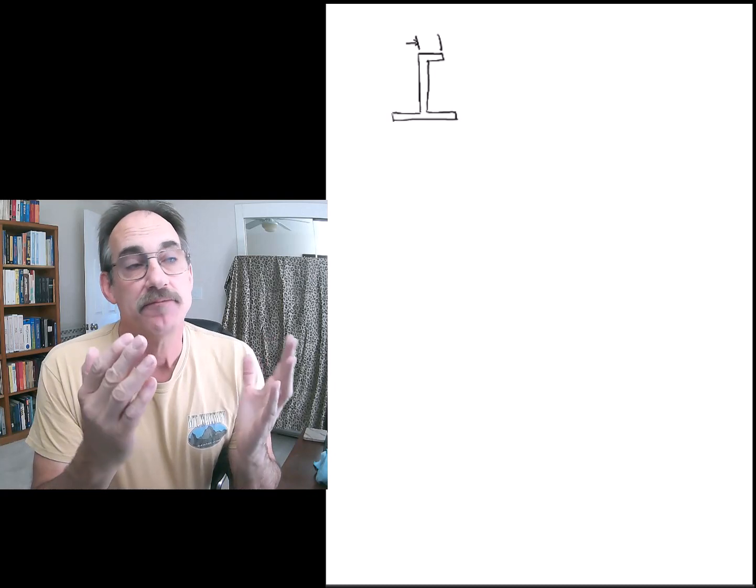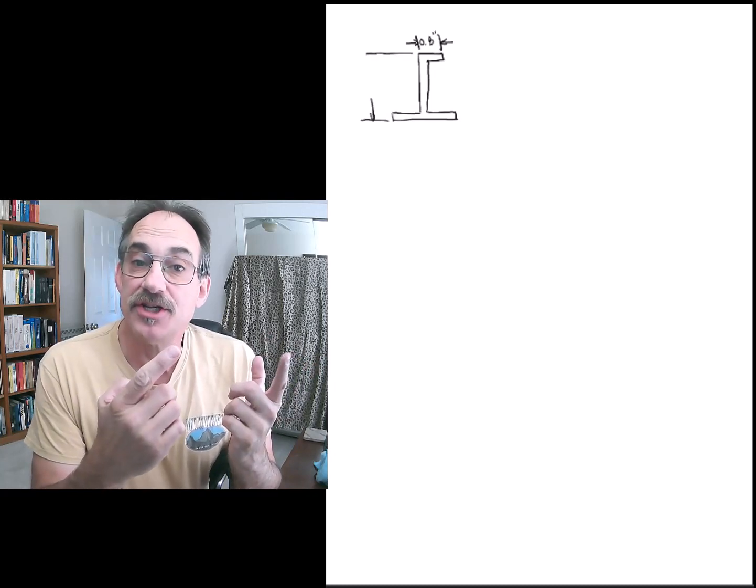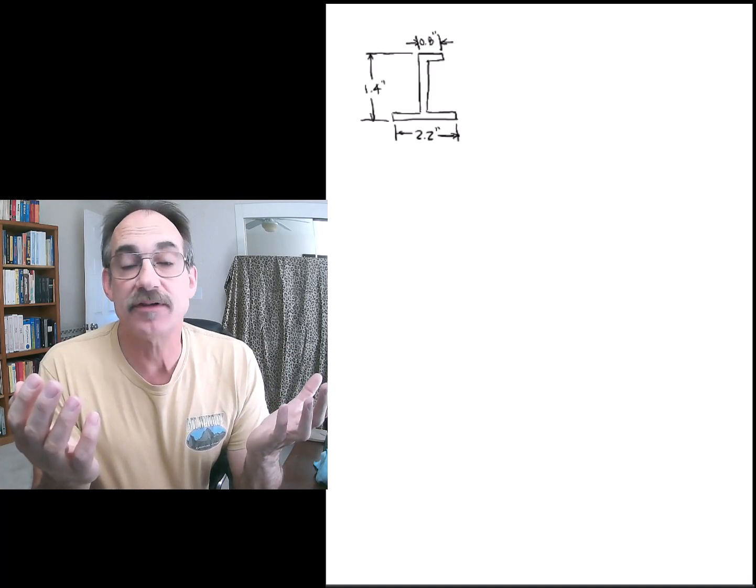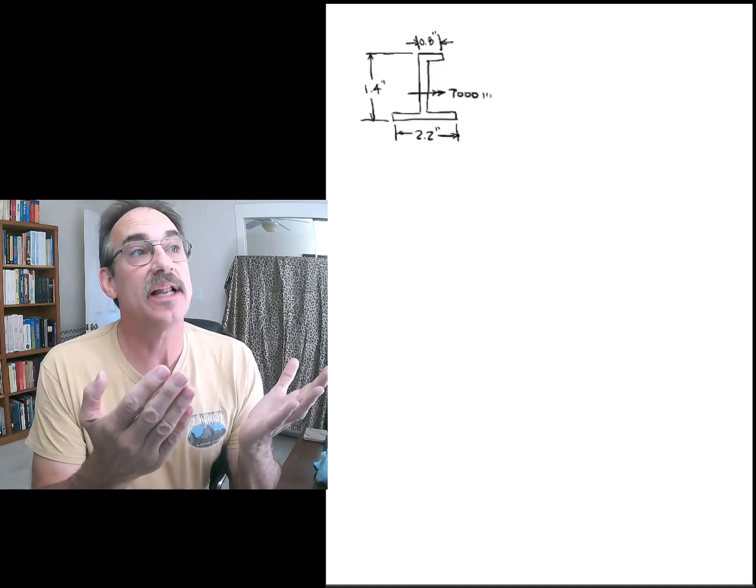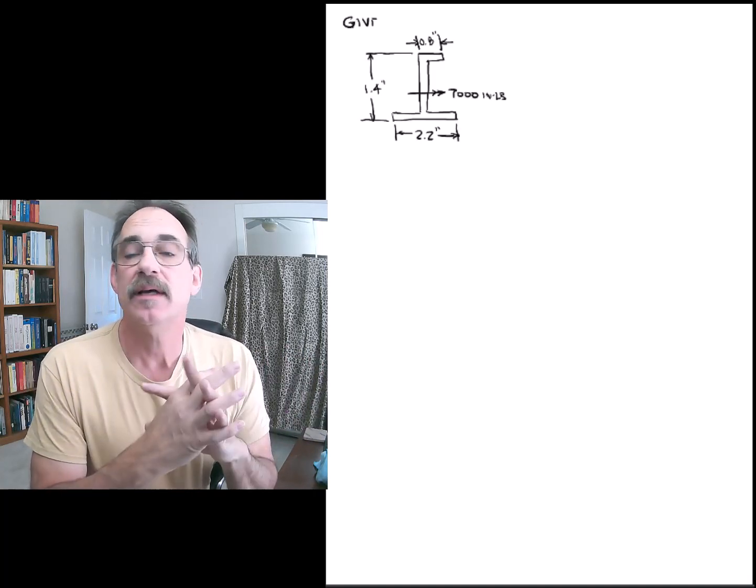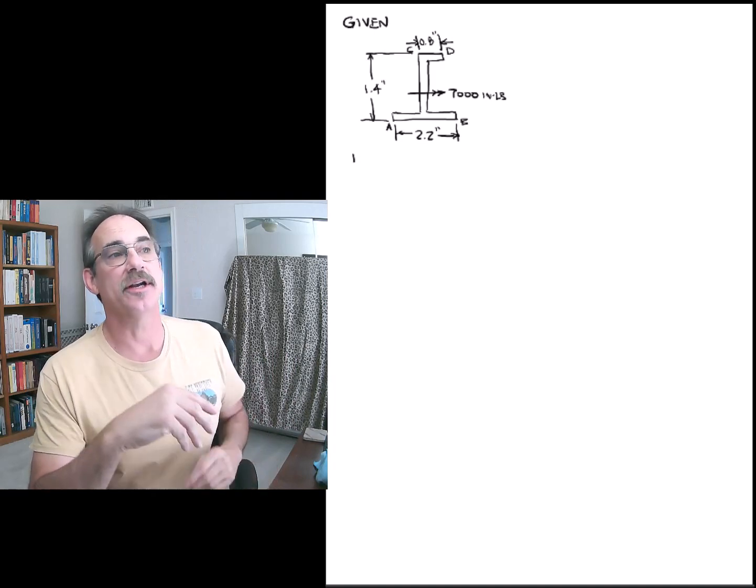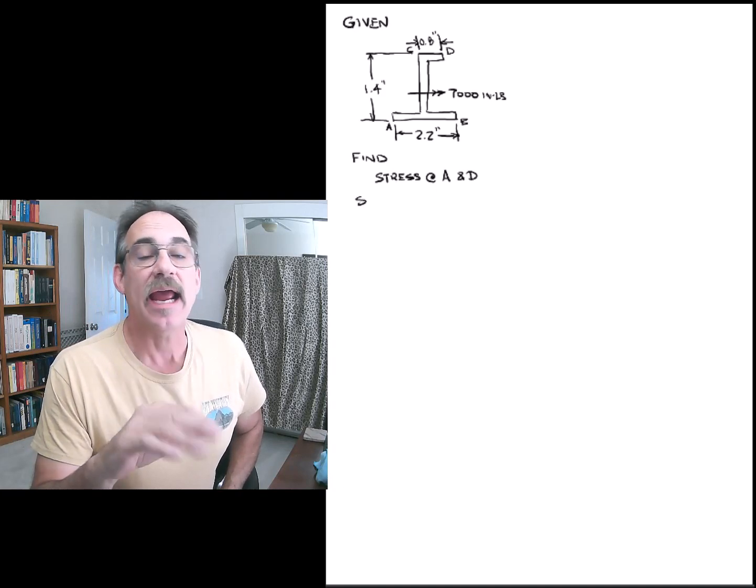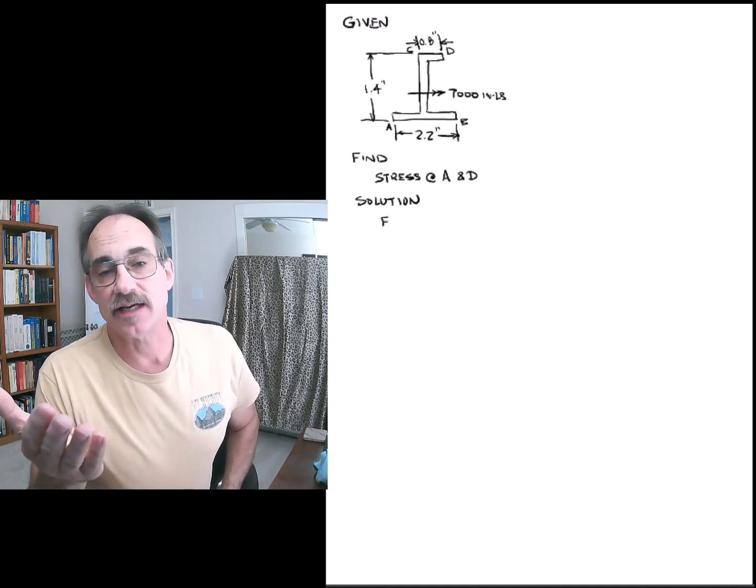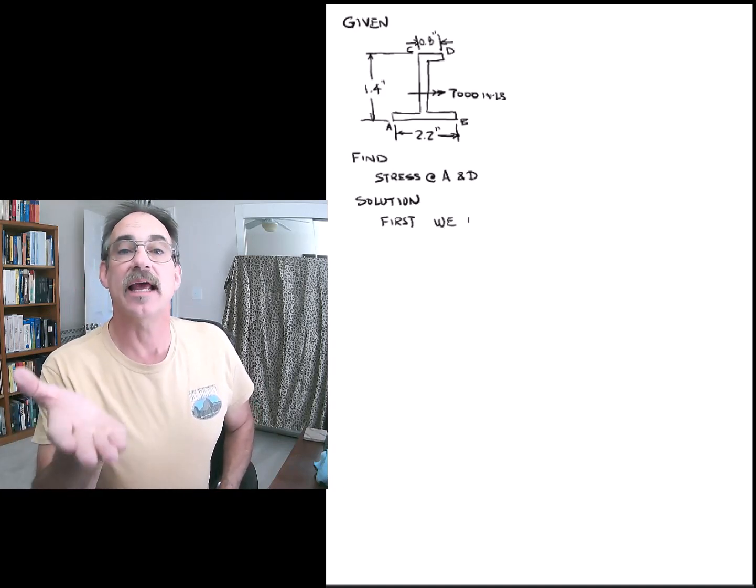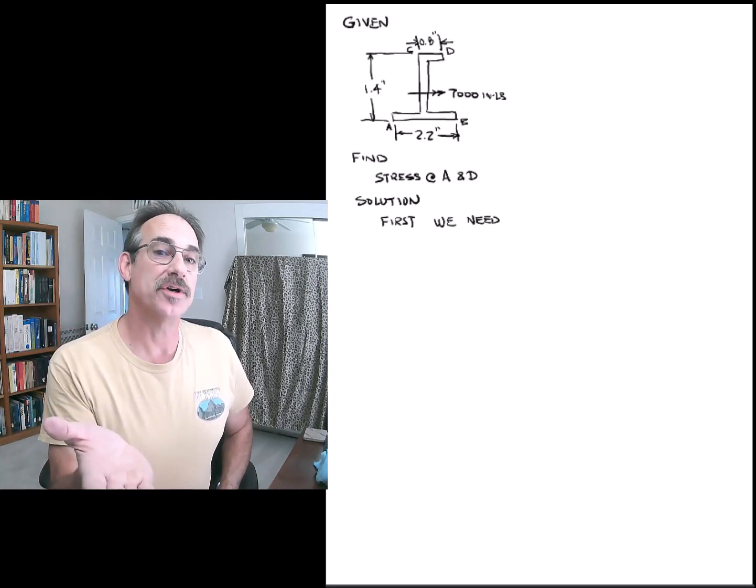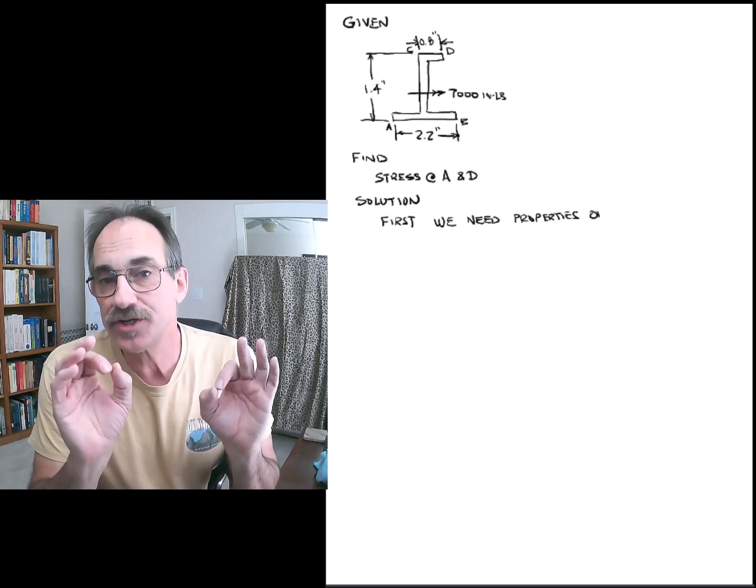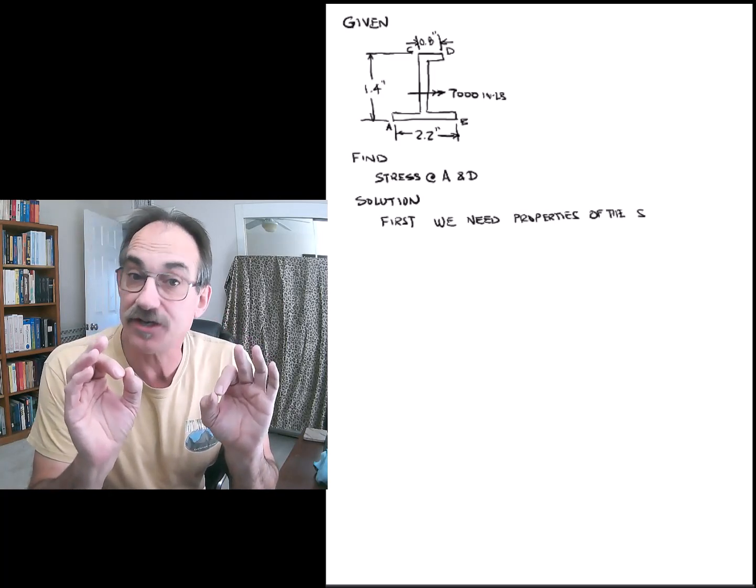So if we're given a stringer, let's say we have a J stringer on an aircraft. This is a typical aircraft section. It's dimensioned like this, and we have a moment applied to the section. So we know all of the dimensions, we know what the loading is, and we want to calculate the stresses at a couple of key points, like the uppermost surface and the lowermost surface, point A at the bottom and D at the top. We're first going to need to calculate our section properties.